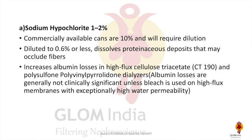The first agent is sodium hypochlorite. It is commercially available at 10% strength and needs to be diluted to 0.6% or less. It dissolves protein deposits that may occlude the fiber. One disadvantage is that it can increase albumin loss with reuse.